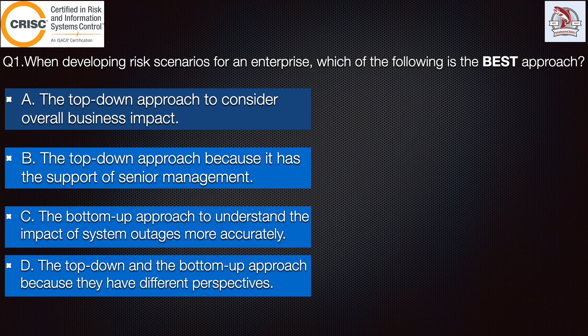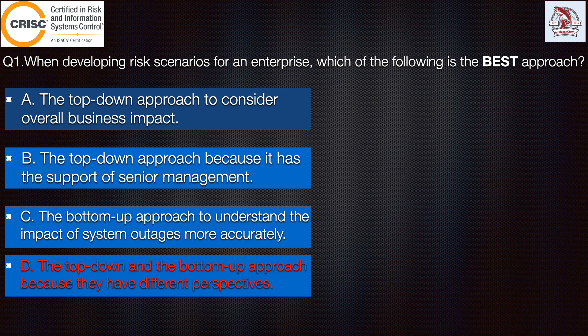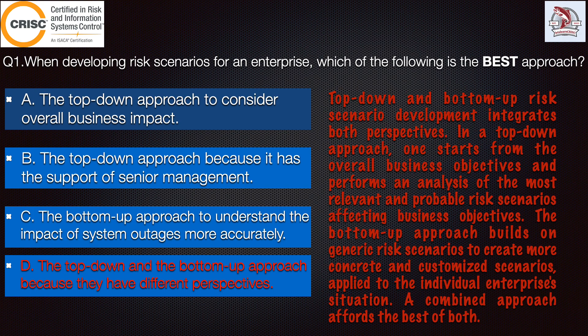The correct answer is option D — the top-down approach and the bottom-up approach because they have different perspectives. The top-down and bottom-up risk scenario development integrates both perspectives. In a top-down approach, one starts from the overall business objectives and performs an analysis of the most relevant and probable risk scenarios affecting the business objectives.